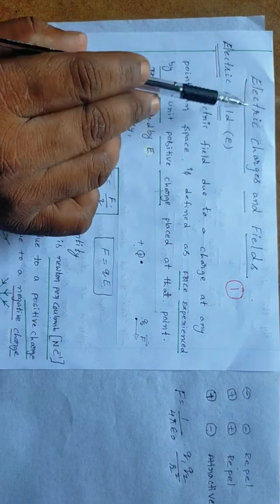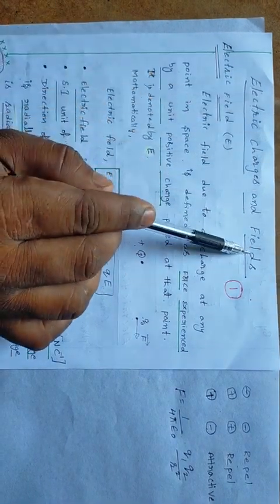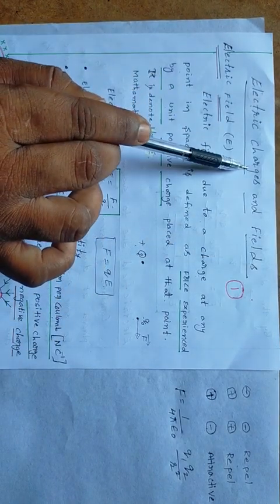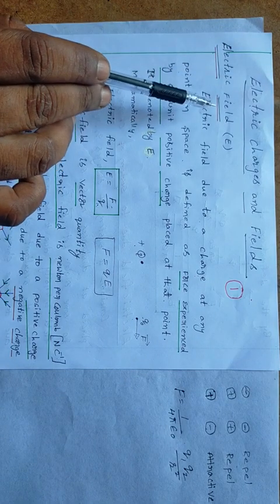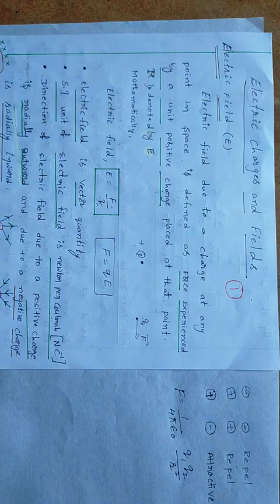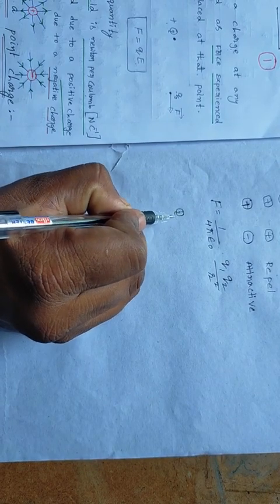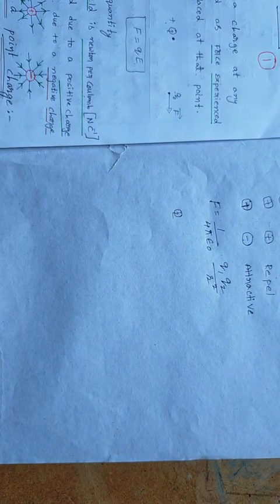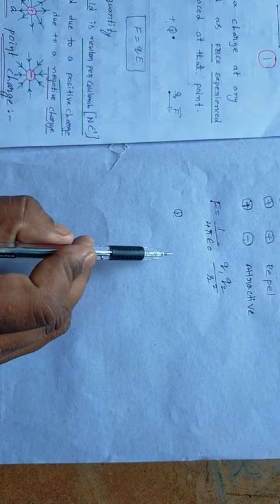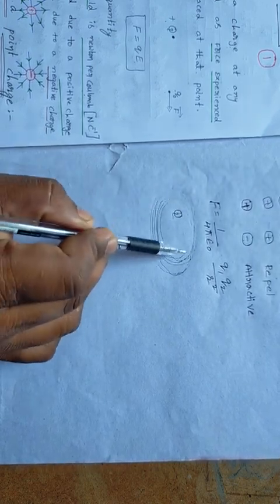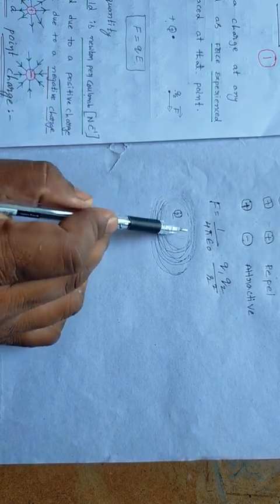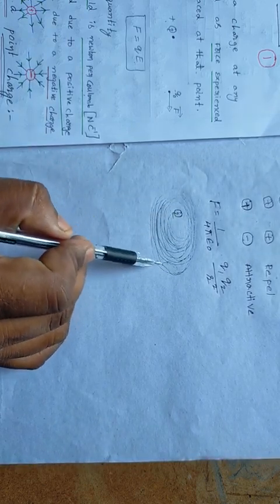The topic we are going to discuss now is the electric field. We have completed electric charges; now we discuss electric field. Electric field — 'field' means some space. If you take a positive charge, around that charge up to some certain space, the space which is responsible for the electrostatic force is called the electric field.